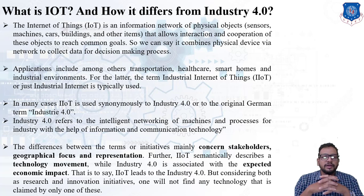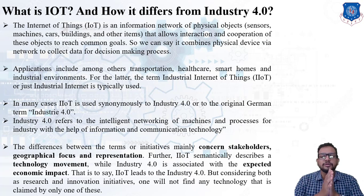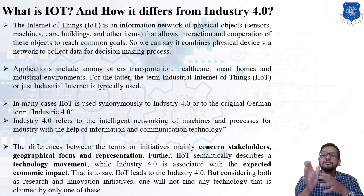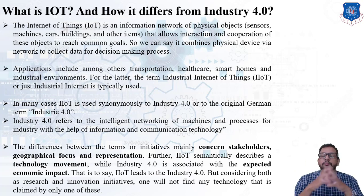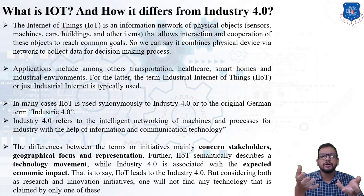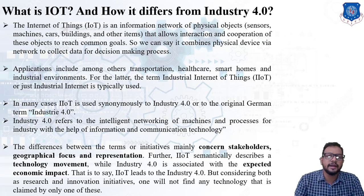What is the main difference between IIoT and Industry 4.0? The difference between the terms mainly concerns the stakeholders, geographical focus, and representation. Further, IIoT semantically describes the technology movement, while Industry 4.0 describes the expected economic impact. But considering both as research and innovation initiatives, one will not find any technology claimed by only one of them — which means Industry 4.0 and IIoT move hand in hand, working together.